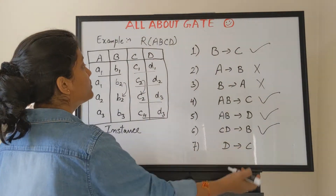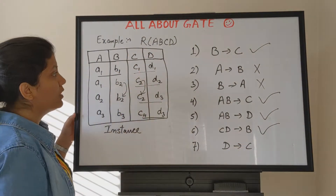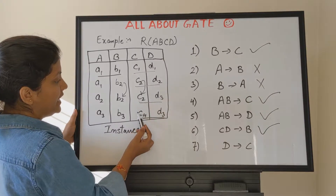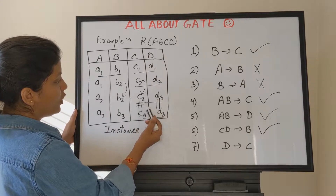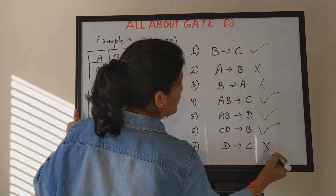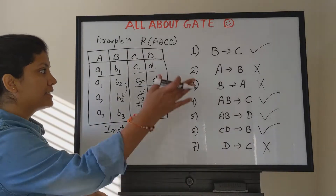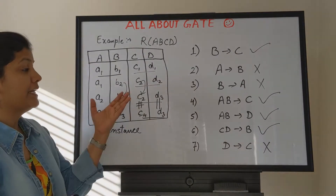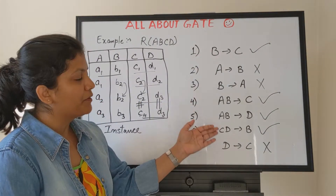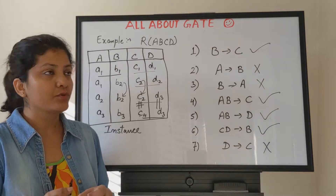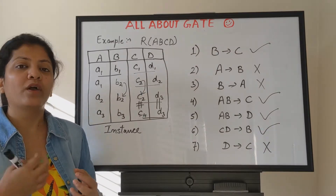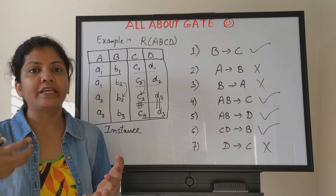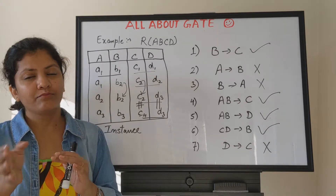Finally, let's check D → C. D has values D1, D2, D3, D3 — D3 is repeated. But when D3 appears the first time the C value is one thing, and the second time it's different. Since D3 repeats but C does not repeat consistently, D → C is not present in this relation. This is exactly how we find which functional dependencies are present or not. The designer who defines the relation knows the meaning of each attribute and which attribute can determine which.